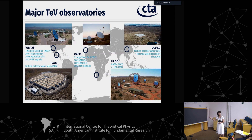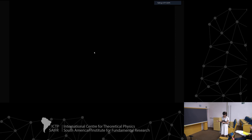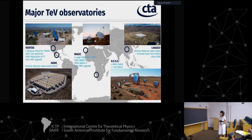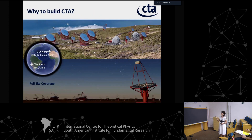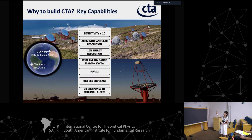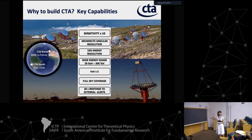You may ask, you have this fantastic sky in gamma rays nowadays - why build CTA? Because essentially CTA will provide full sky coverage with two sites, one in the north in La Palma and the other in Chile. It will also improve sensitivity, angular resolution - for the first time we are going to have arc-minute angular resolution - 10% energy resolution, and a wide energy range covering from 20 GeV up to 300 TeV. GeV means 10^9 electron volts and TeV means 10^12 electron volts.